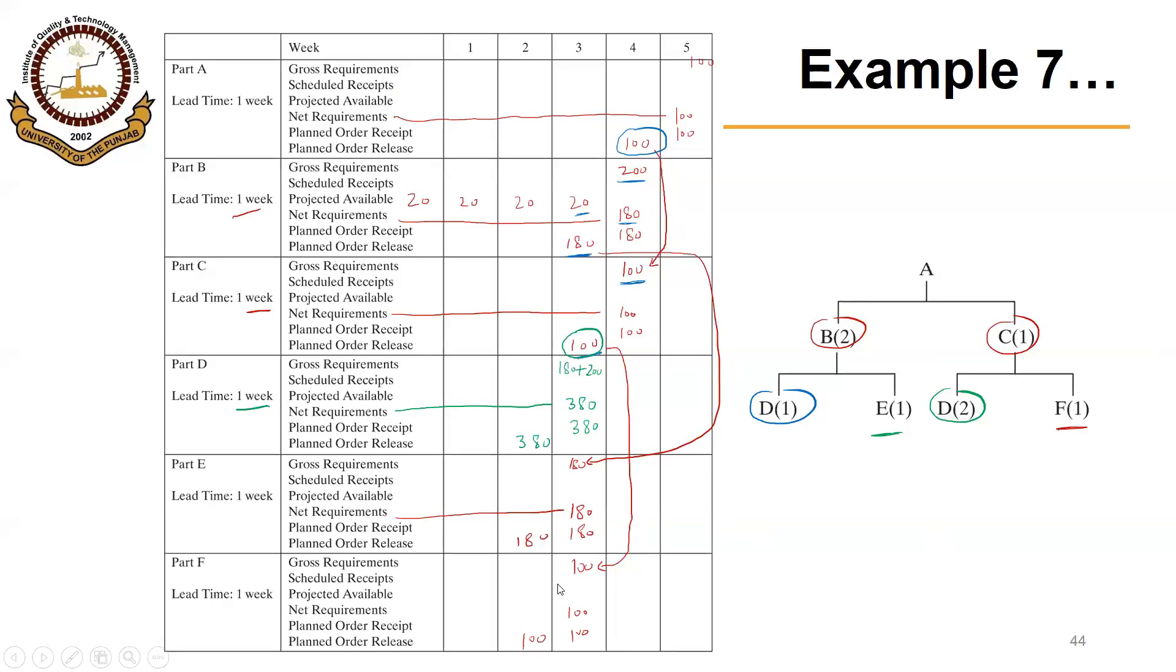So that was a relatively simple example, but we discussed all concepts that we covered so far. That is the lead time offsetting, exploding, and the low-level code as well. For example, in this case D had a low-level code of 2 for both B and C. But we didn't discuss the safety stock or safety lead time in this example.